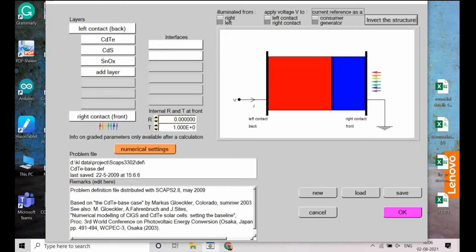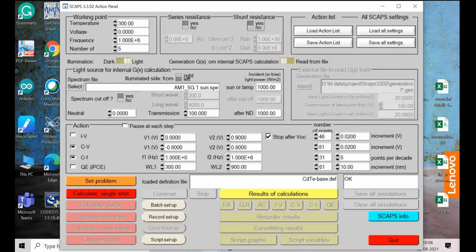So now in this structure this is our structure p and n plus type of structure. So what I will do I will now take CV value or CF value and try to simulate out in light condition.